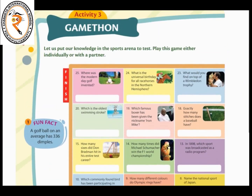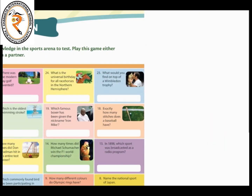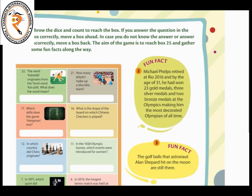Next is an Activity. Let us put our knowledge of the sports arena to the test. Play this game either individually or with a partner. You have to find answers to questions such as where was modern-day golf invented. Some questions are given based on the games, with fun facts also provided. I hope you will be able to find answers for these questions on your own.